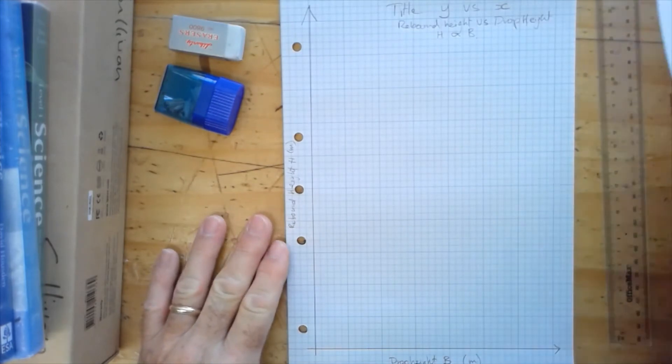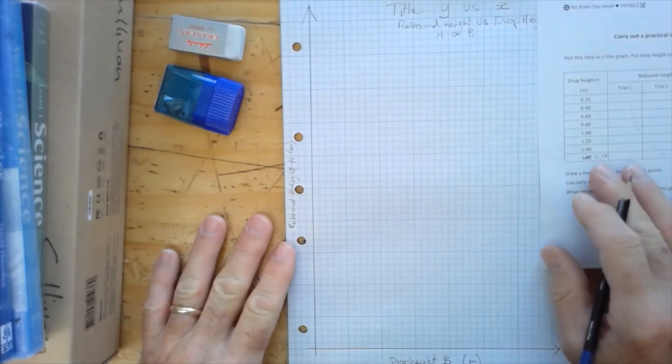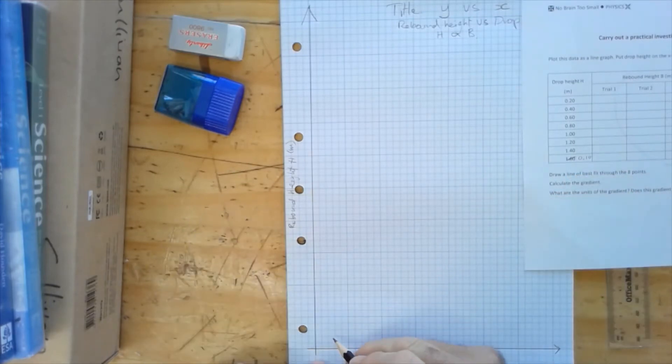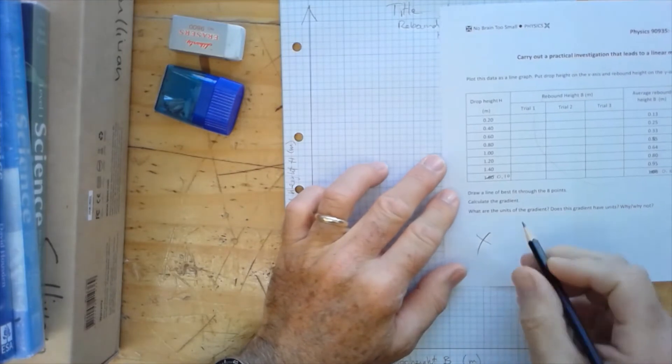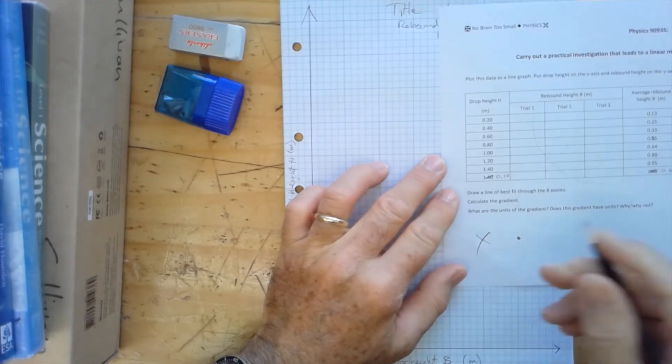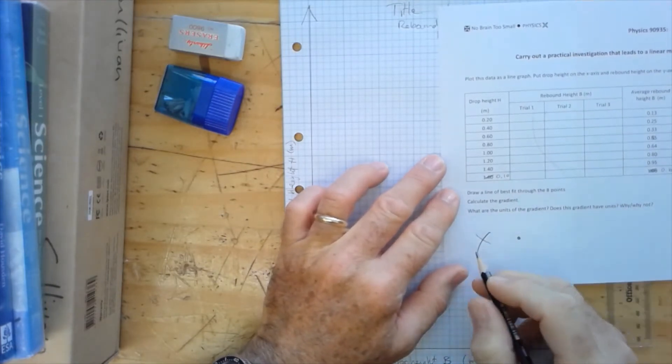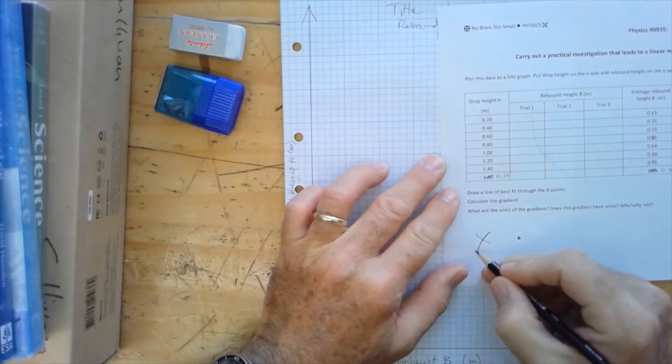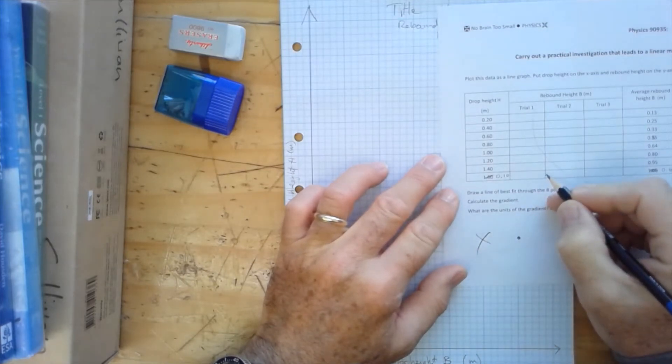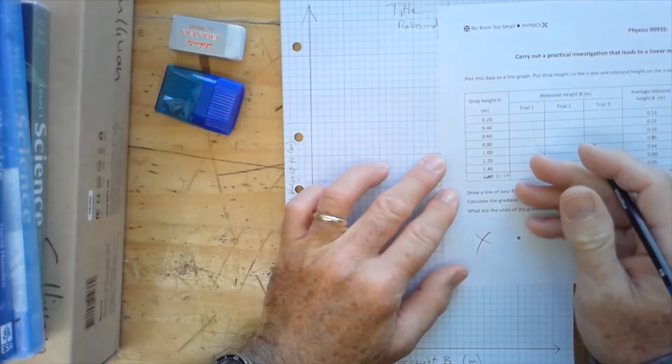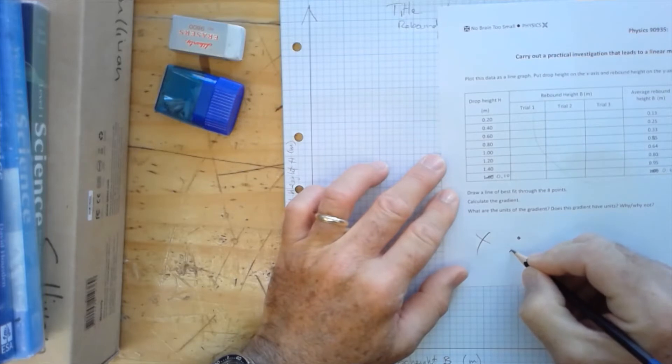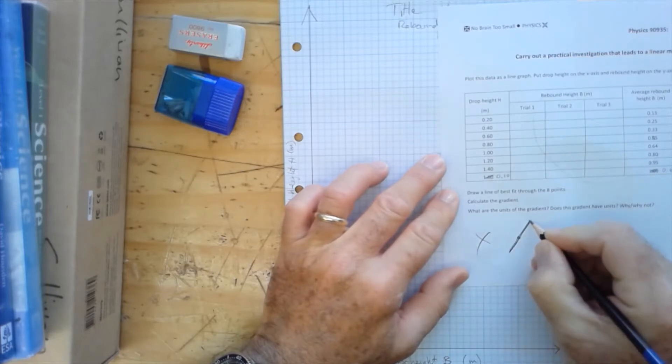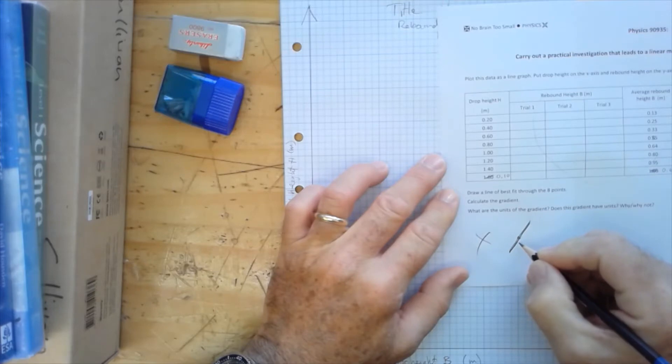Now we put our points in, and the points we put in using a cross, little crosses, not dots. And we do that because later on when we draw our line of best fit, we don't always get it right. First time we'll have to erase it, and if we have dots, it's possible that as we draw our line, the dot disappears. So we're going to use crosses.